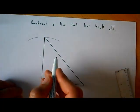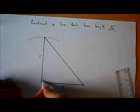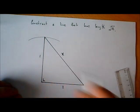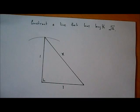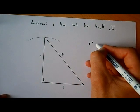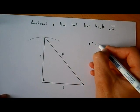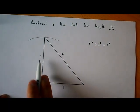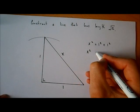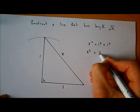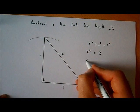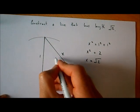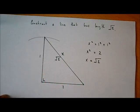So how do I know that this line has length the square root of 2? Well, we've made a right-angle triangle here, and by Pythagoras' theorem — let's call the length of that line x — the square of the hypotenuse is equal to the sum of the squares of the other two sides. So x squared equals 1 squared plus 1 squared. 1 squared is 1, so x squared is equal to 2. And if x squared is 2, then x is the square root of 2. So this line here has length the square root of 2.